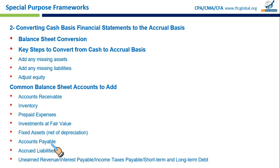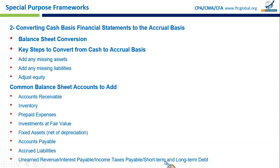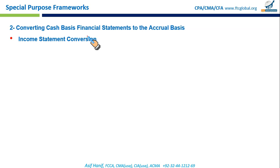Also add: fixed assets — property, plant, and equipment reported on a net basis after depreciation; accounts payable — money owed to suppliers for goods or services received; accrued liabilities — expenses incurred but not yet paid, like wages; unearned revenue — income received but not yet earned; interest payable — interest on debt due but not yet paid; income taxes payable — taxes due but not yet paid; and other short-term and long-term debts.